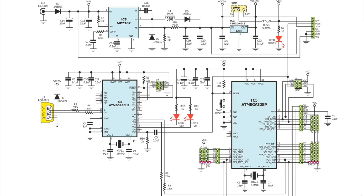We have a big schematic that we will study and analyze. We can see the DC connector — this is D12. This DC connector has two parts: this part is connected to the ground and this is the hot part, where power is passed through.